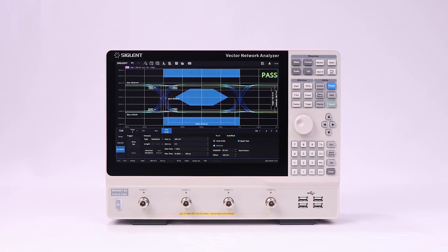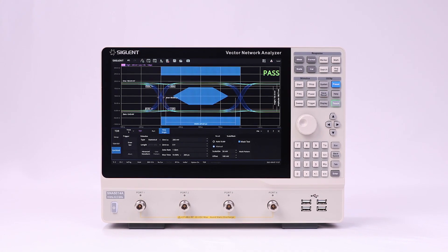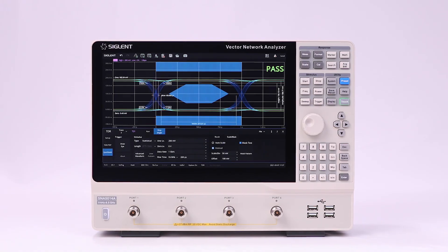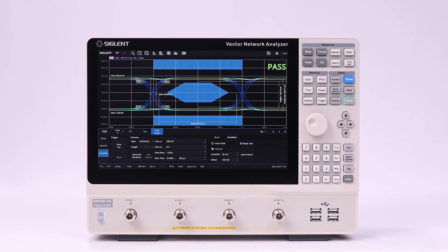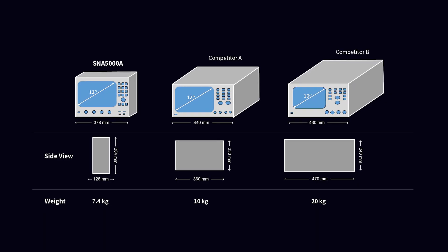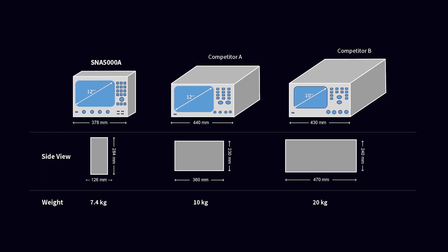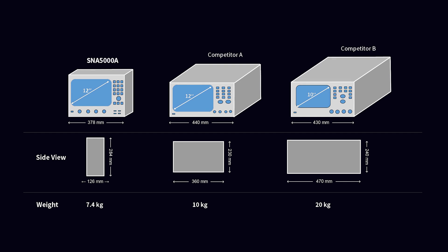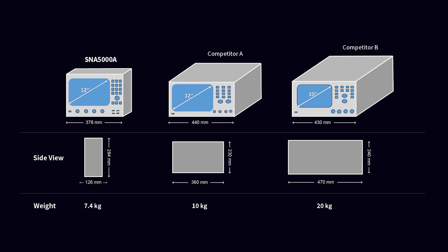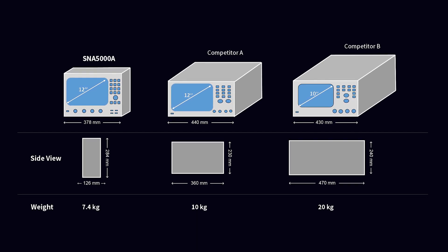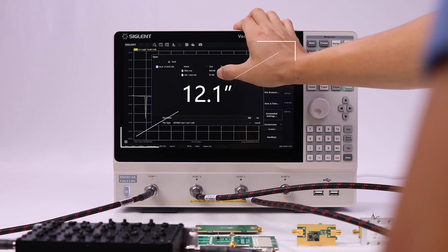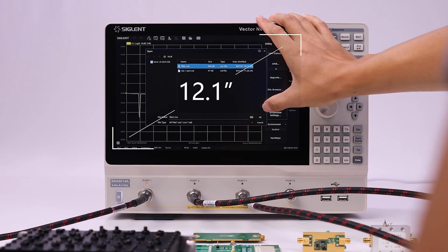Advance to the next level with the Siglent SNA 5000A Vector Network Analyzer. It is smart on size and versatile on abilities. It's half the size of contemporary VNA designs, but has one of the largest touchscreens for ease of use.